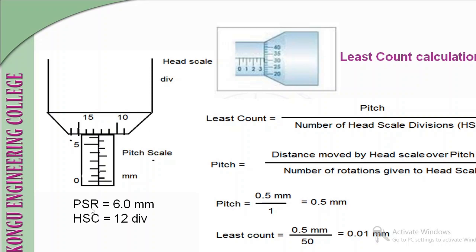To take readings: count the number of completely visible divisions on the pitch scale. For example, if divisions up to 6 are visible, the pitch scale reading (PSR) is 6 mm. For the head scale, check which division is completely crossed by the reference line of the pitch scale. If the 12th division is crossed, the head scale coincidence (HSC) is 12.